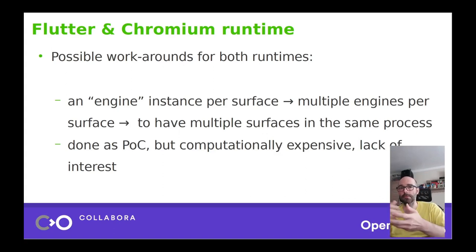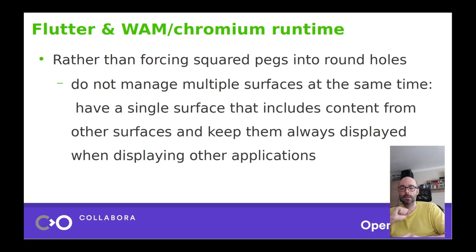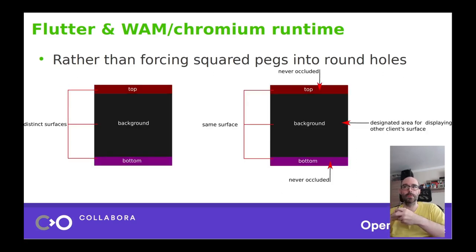I've done that for Chromium as a proof of concept, but it is computationally expensive and requires a lot more work. So rather than forcing square pegs into round holes and trying to adapt the toolkits and runtimes to support what would have been normal otherwise, we now have a new workaround in place: a way to designate a certain rectangle area as the activation area for an application, and just have one single surface to manage rather than multiple surfaces from within the same process.